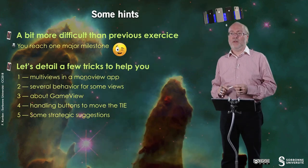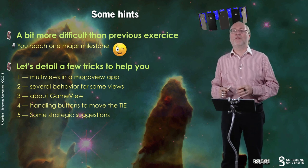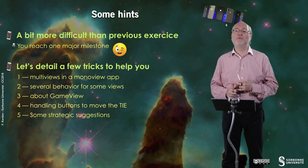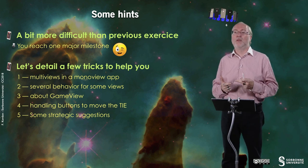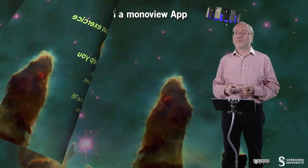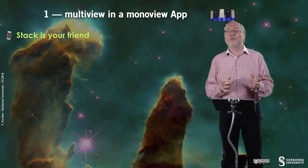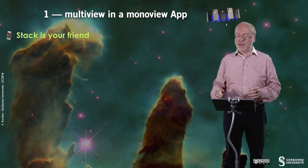Let me give you some hints. This exercise is a bit more difficult than the previous ones, and it's the case because you reach a major milestone. So take it nicely. I would like to detail with you five elements: first, how you put multi views in a menu view app because you still have a menu view app; how you can handle buttons to move the TIE fighter; and some strategic suggestions in the way to implement your exercise. So first, how do you put multi view in a menu view? And of course here, stack is your friend.